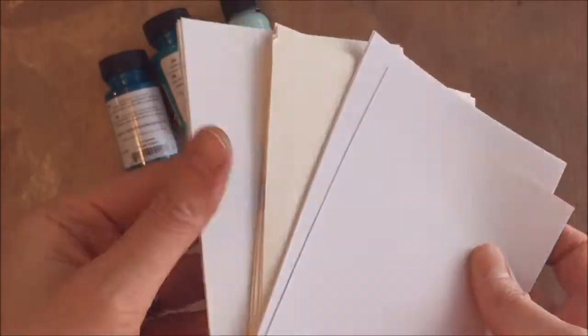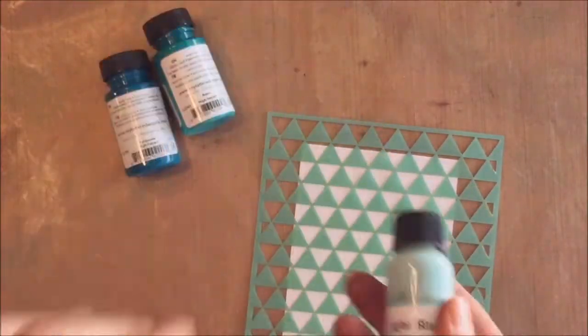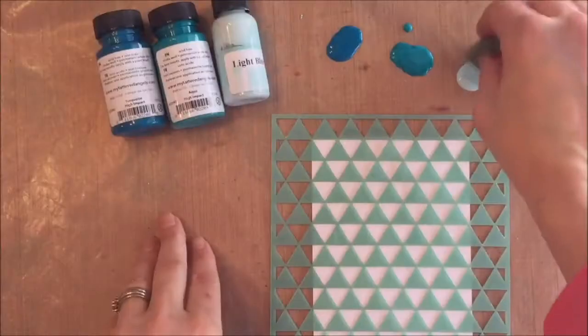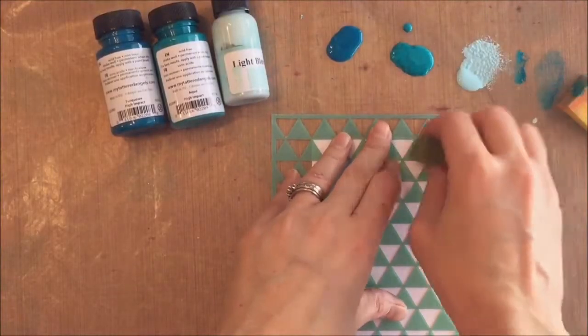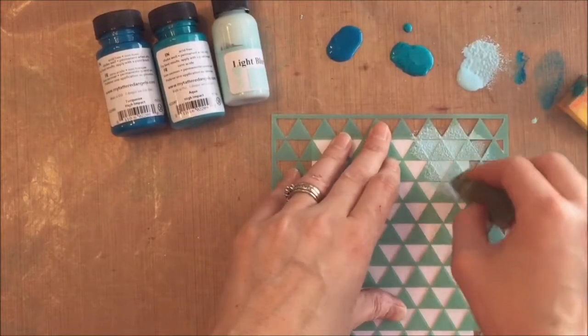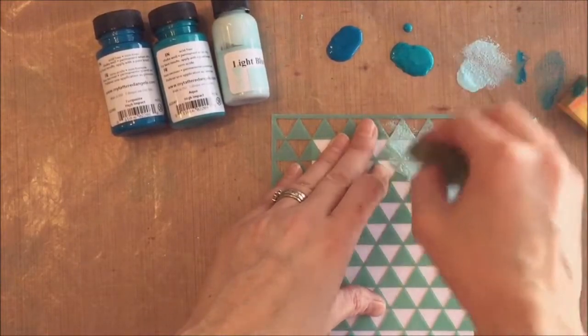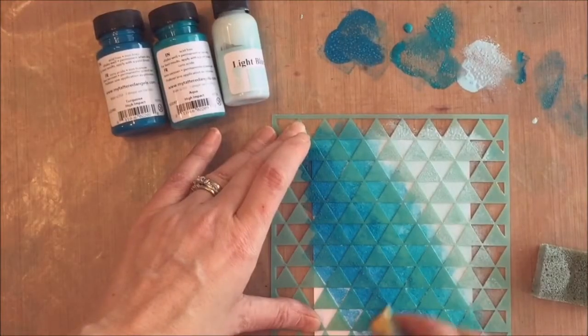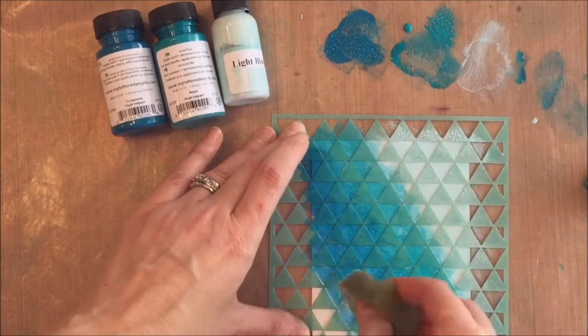I've cut them into some panels to fit on a card size and for my first background we're going to do some stenciling. I've used light blue, aqua and turquoise in the high impact paints. These are great for painting furniture but also go on really lovely when you put them on paper.